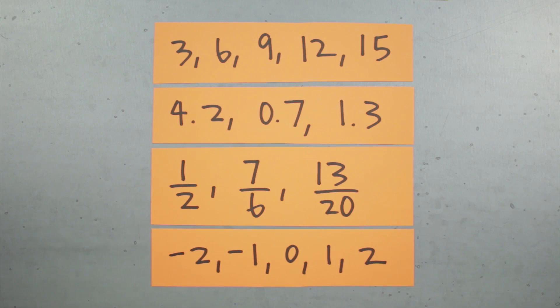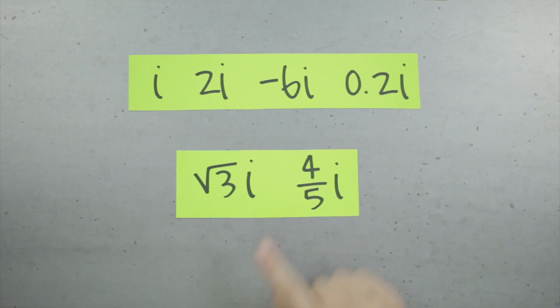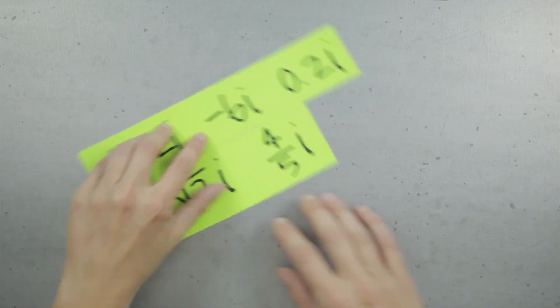Imaginary numbers, on the other hand, are any numbers that include the imaginary number i, like these. The i stands for imaginary, and it represents one exact specific value, just like the exponential number, or like pi.